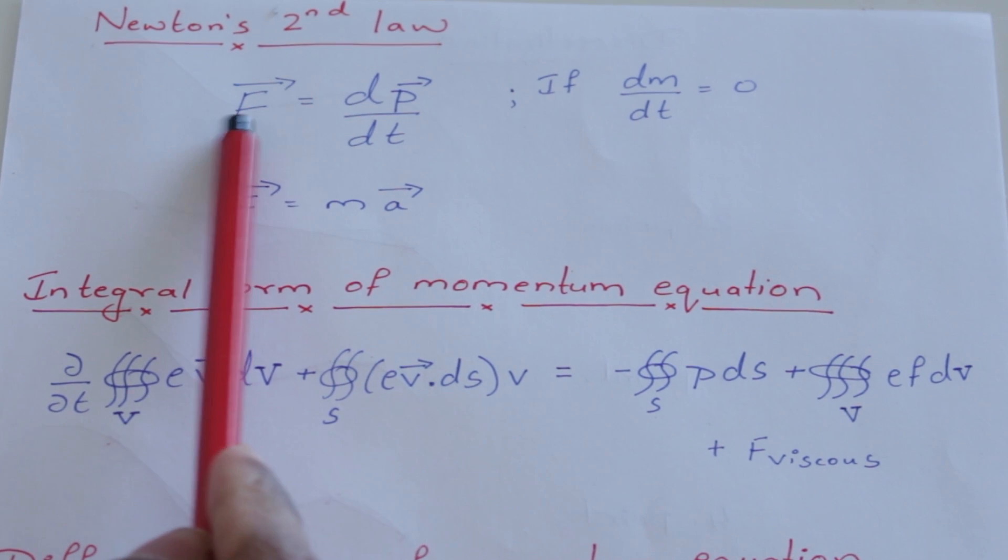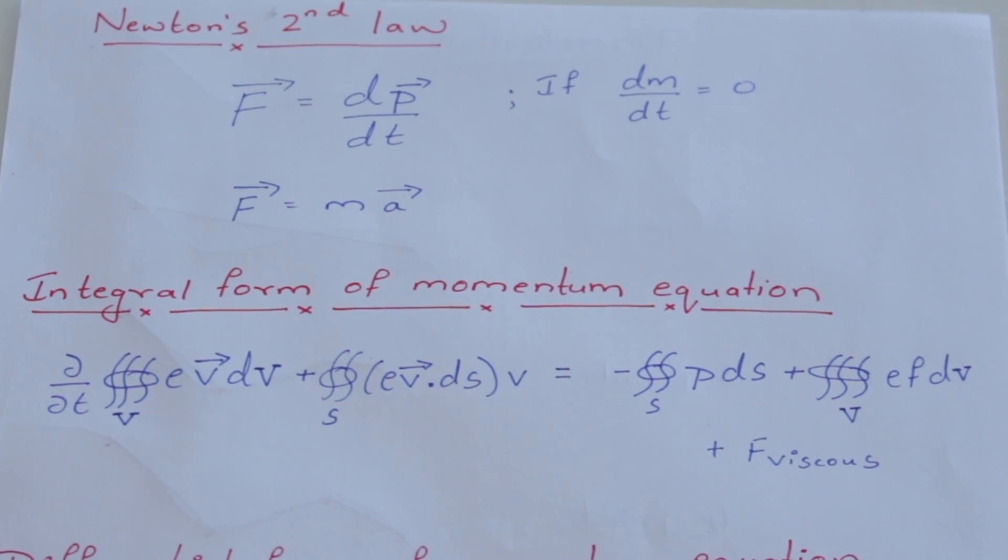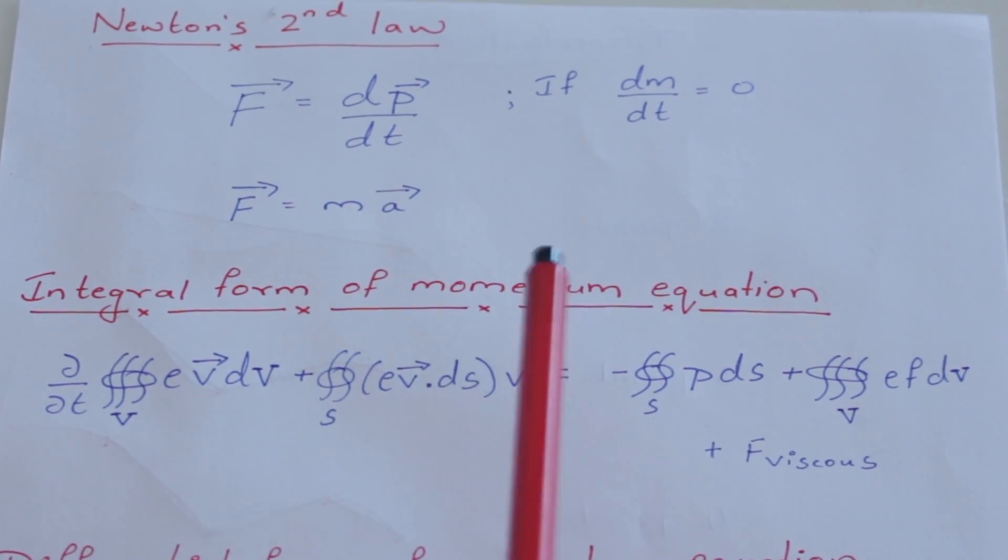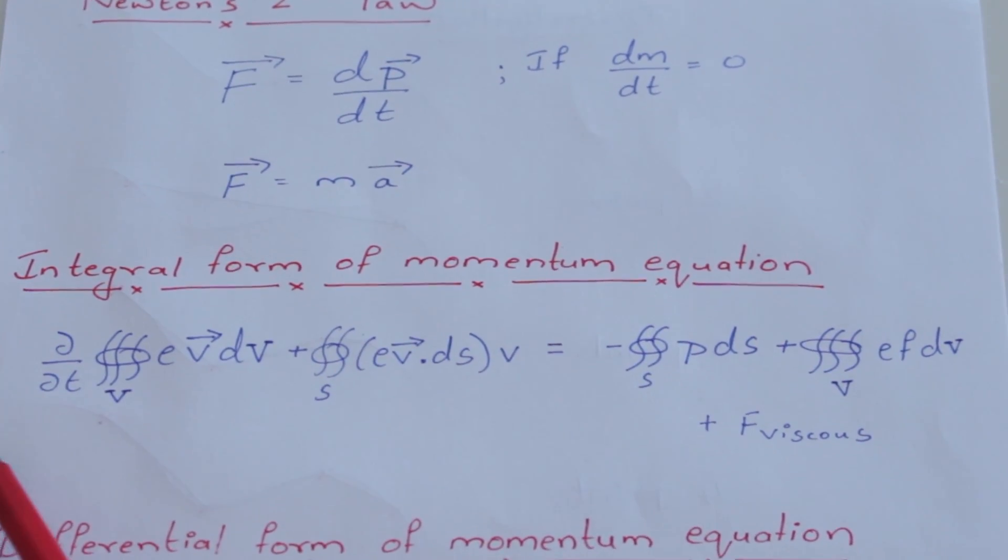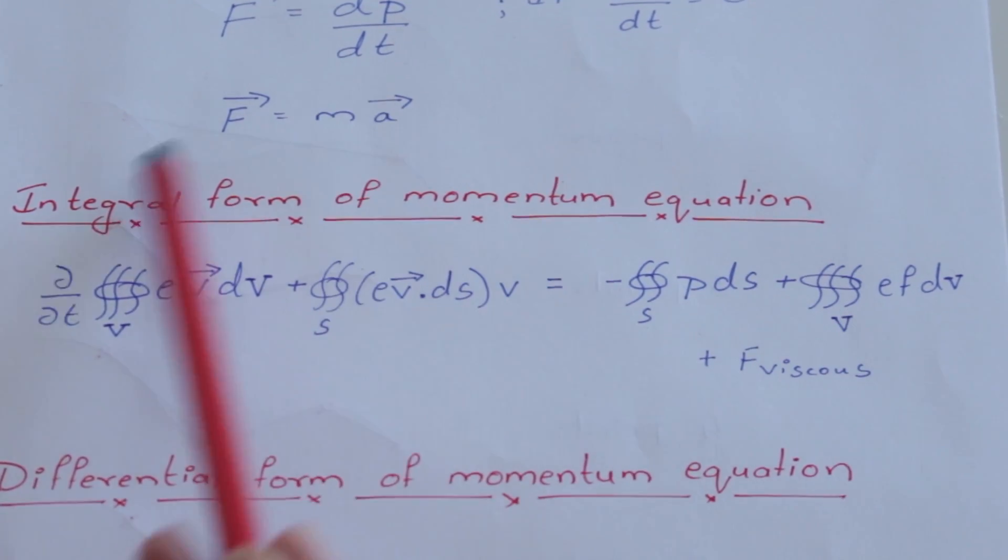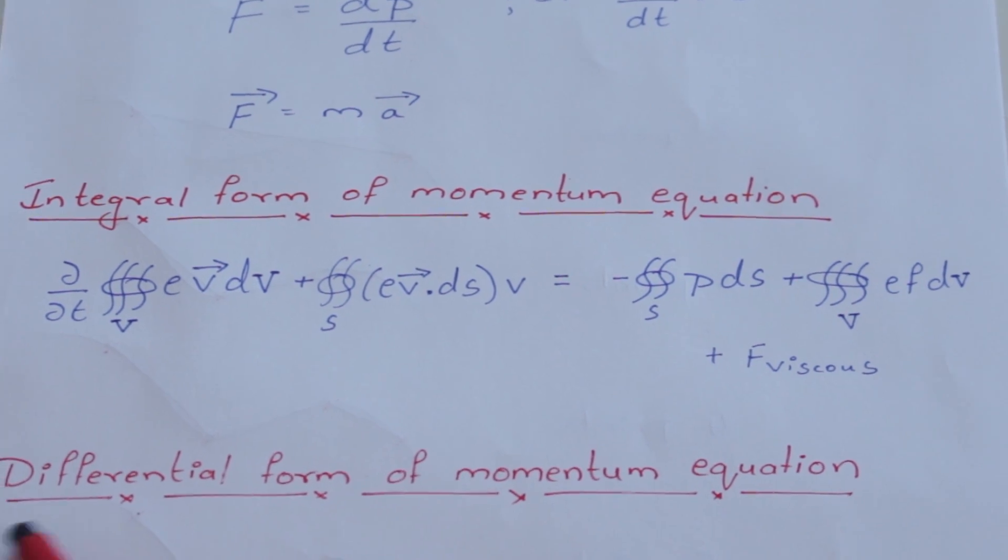We won't go into the details of this derivation. But if you are interested in knowing how this is done, do let us know in the comments below. And we will do a separate video to explain this. The conservation of momentum is an expression of Newton's second law of motion, which states that the rate of change of momentum is equal to a force. Now, even the momentum equation can be expressed in an integral form, like you see here. And as a differential form as well.